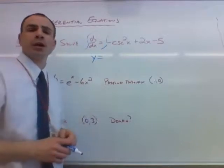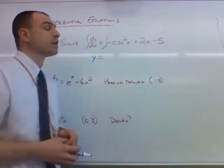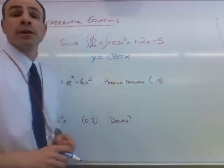The antiderivative of negative cosecant squared. We learned that way back when, when we talked about our trig derivatives, the antiderivative of negative cosecant squared, that's cotangent of x.